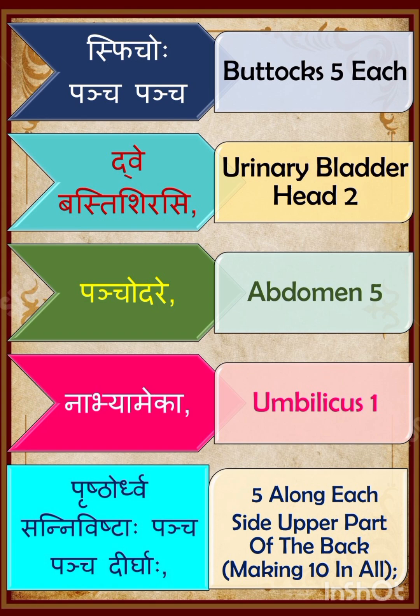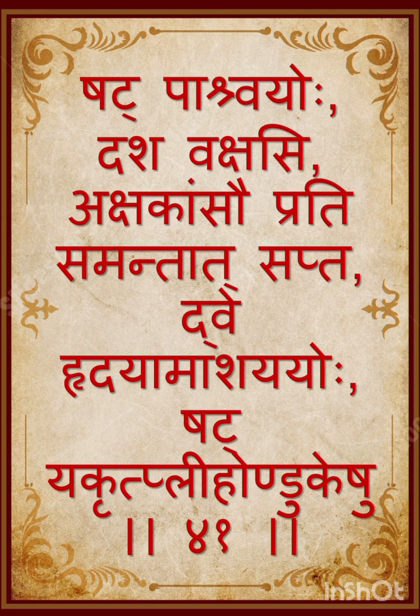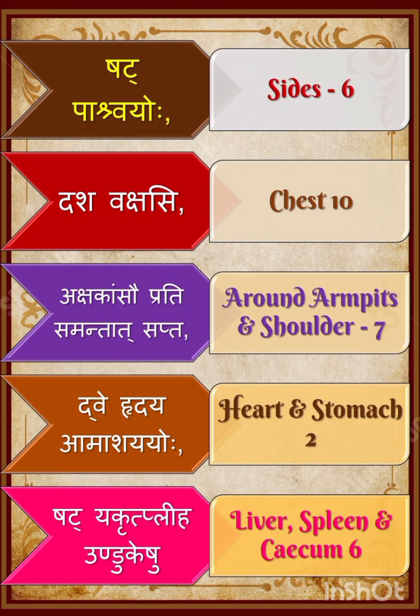Parchwayoho — Side 6. Dashavakshasi — Chest 10. Akshaga Amsopradi Samandhat — Around armpits and shoulder 7. Dwe Hirdaya Amashayoh — Heart and Stomach 2 each. Shat Yagritha Pleeha Undugeshu — Liver, Spleen, and Cecum together 6 Peshi.